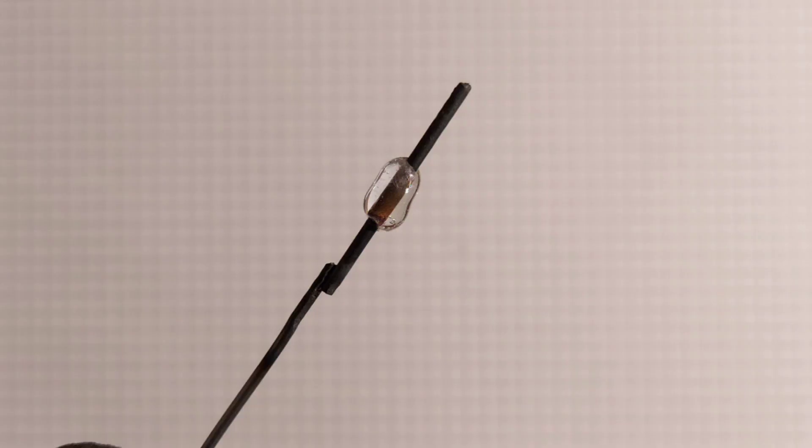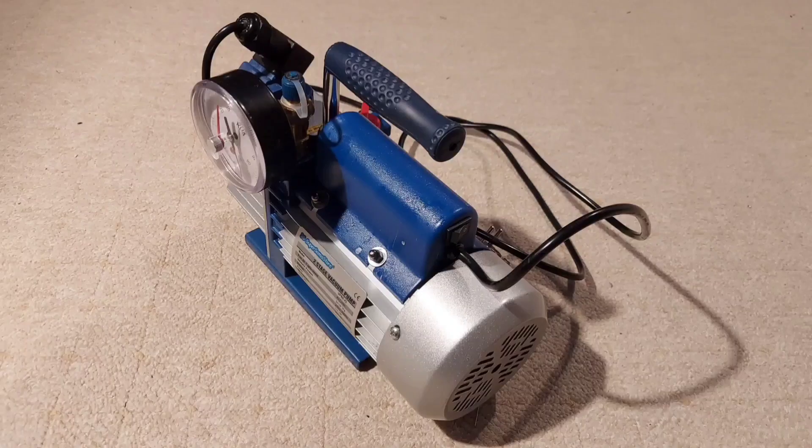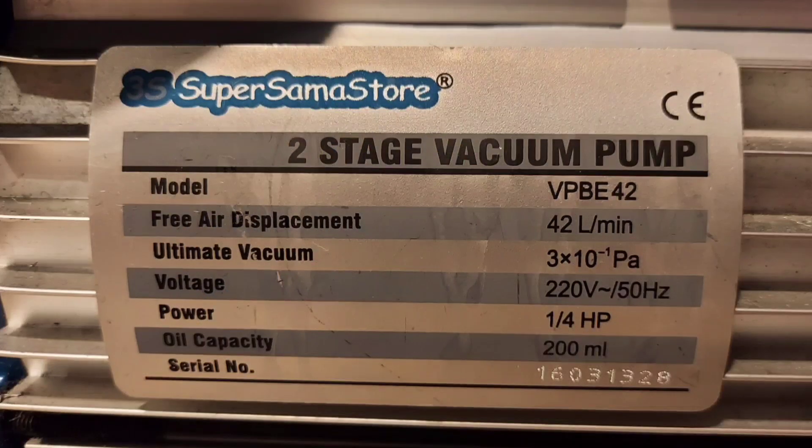You cannot for example bend tungsten, it will break. And of course you need a pump, and in my case it was a two-stage rotary pump. As you can see in the ratings the ultimate vacuum is about 0.003 millibars. It's pretty low and it's about the maximum you can get with such mechanical pumps.